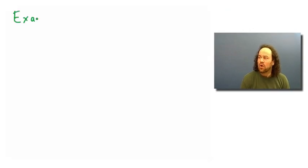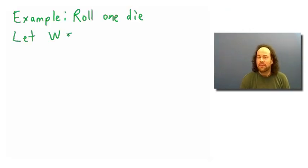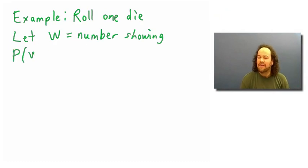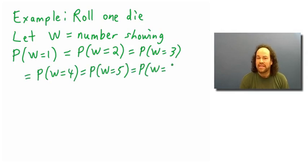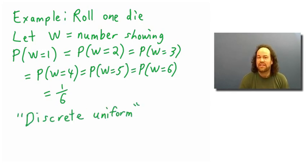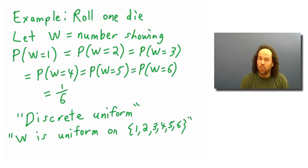For a whole different kind of example, we can imagine rolling a six-sided die. If I randomly roll the die, I was equally likely to get any of the numbers between 1 and 6. If we let w equal the amount showing on the die, then w is equally likely to be 1, 2, 3, 4, 5, or 6 — each probability equal to 1/6. We call this the discrete uniform distribution, where probabilities are uniform on the six points from 1 up to 6.